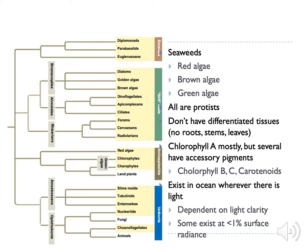They are all protists, defined as such because they have no differentiated tissues. Although some of them look like plants, they do not have true roots, true stems, or true leaves. All the cells in the body of the organism are functionally similar. All these algae contain chlorophyll A, the most common type of chlorophyll, but also other types like chlorophyll B and C. You may also see other pigments like carotenoids, which can explain the color of those algae.